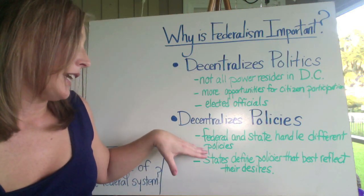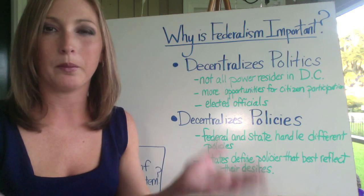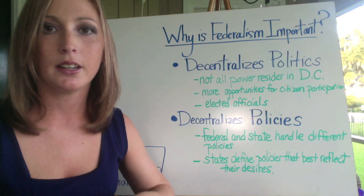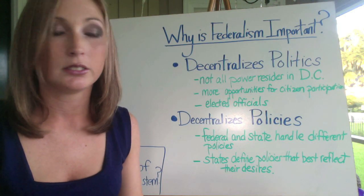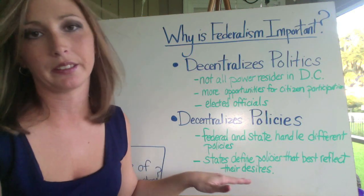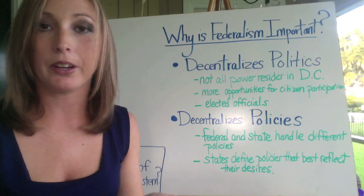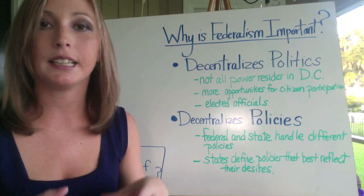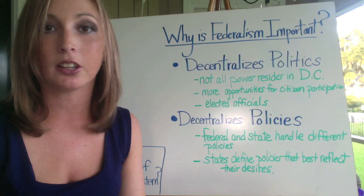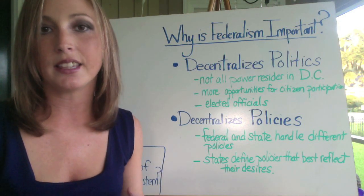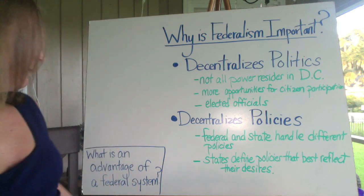Federalism also decentralizes policies — federal and state governments handle different types of policies. The national government handles policies that pertain to the entire nation, whereas certain policies can be left to state officials, such as marriage laws or drinking age. States define policies that best reflect their citizens' desires. For example, recently there has been a push for gay marriage to be legalized across all states. Because it is left to state policy, some states have passed legalized gay marriage while others are slower to follow — reflecting what the citizens in each state desire.